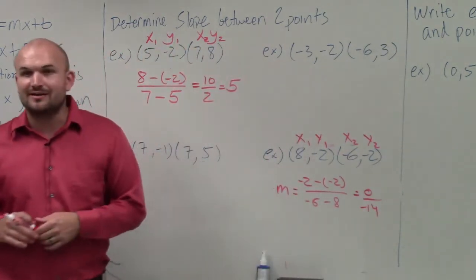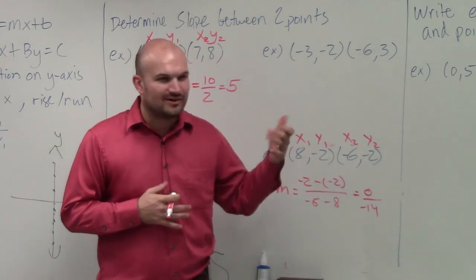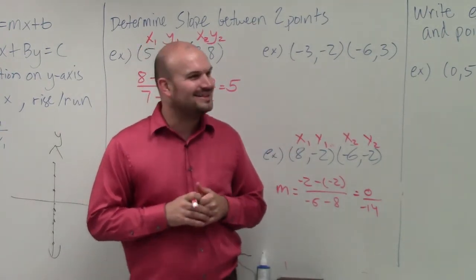And then 0 divided by negative 14 is 0. Now, if you have a slope of 0, does anybody know what type of line that creates?